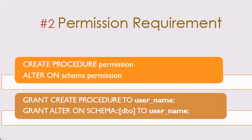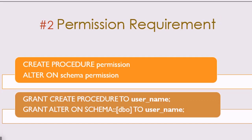Next, let's understand what permissions a user requires to create a stored procedure. There are two permissions required: first is the CREATE PROCEDURE permission, and second is the ALTER ON SCHEMA permission. If a user does not have these permissions, they will not be able to create the procedure and SQL Server will return an error.